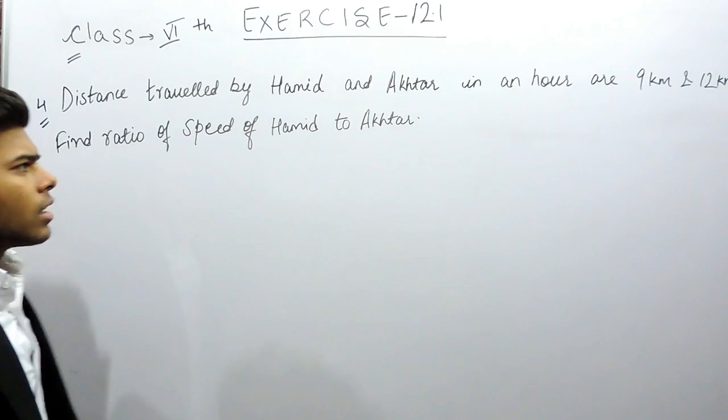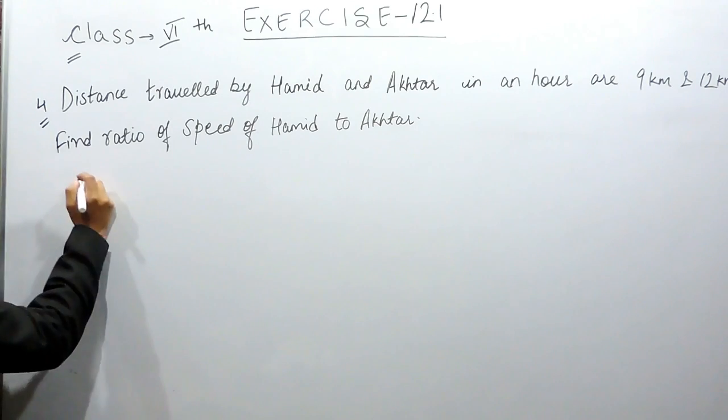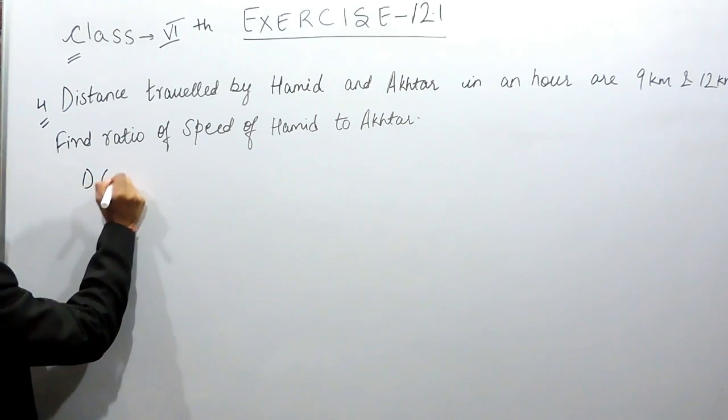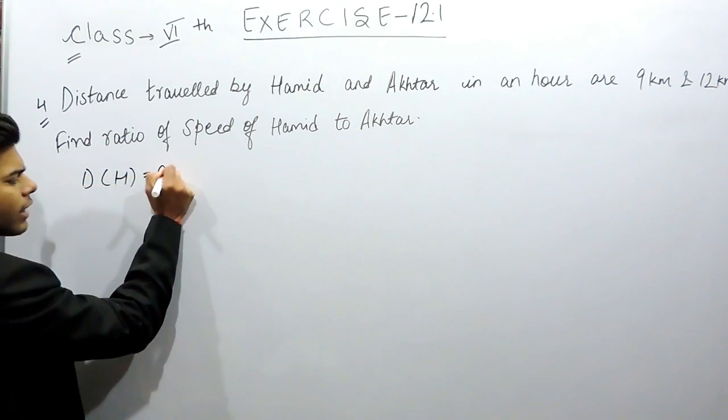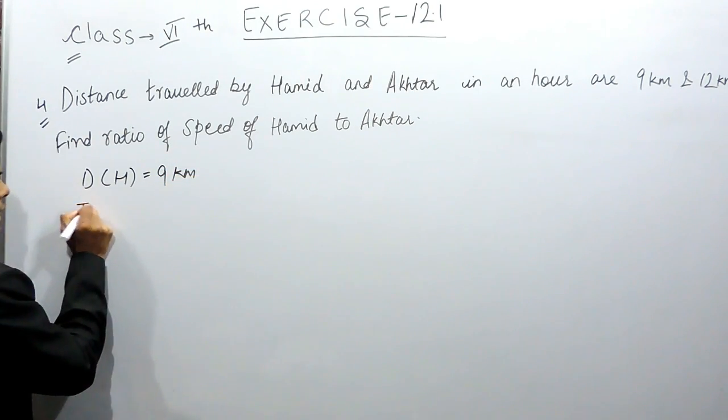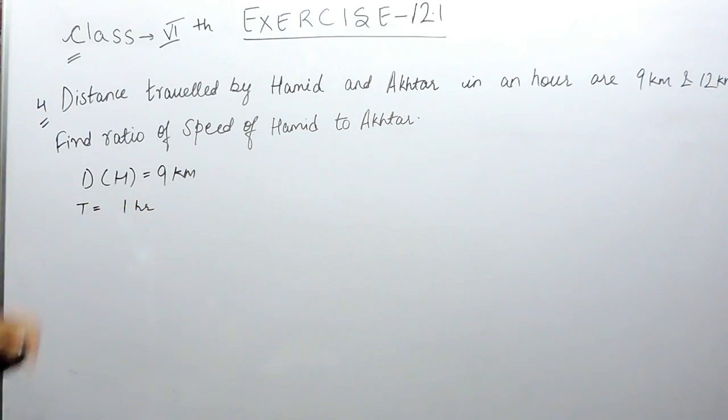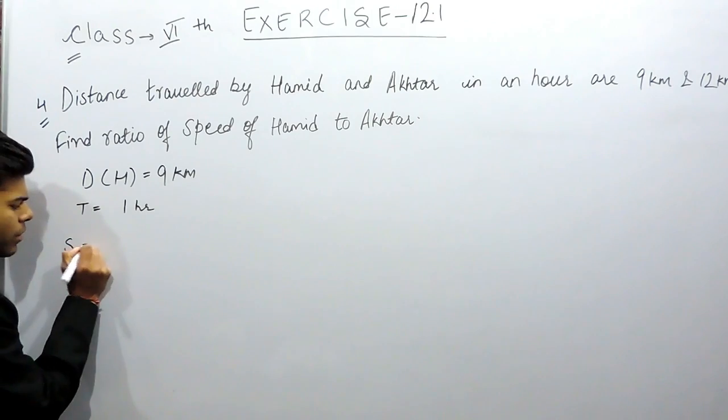and the ratio of speed of Hamid to the speed of Akhtar. So first of all, distance of Hamid is equal to 9 kilometers, time is 1 hour because we are given that in an hour. So speed equals